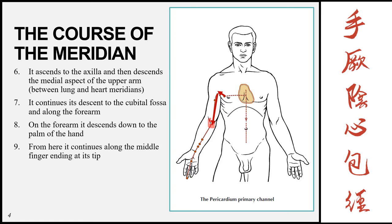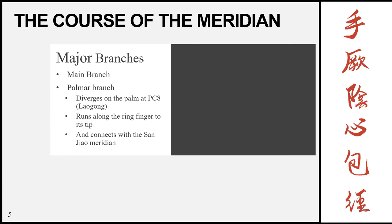It continues its descent to the cubital fossa and then goes along the forearm, continuing its descent down the forearm to the palm of the hand. From here it continues along to the middle finger and ends at its tip.